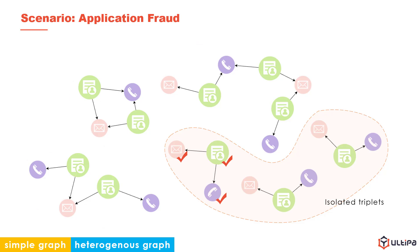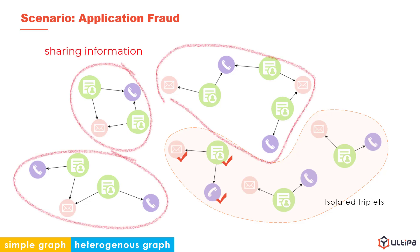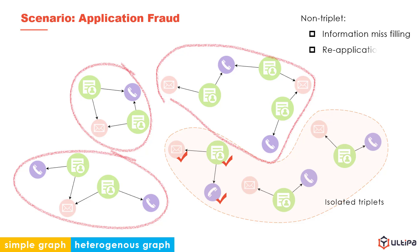Any structure larger than a triplet results from sharing emails or phone numbers between applications, suggesting a chance of information mis-filling or reapplication by the same or different person. The non-triplet structures are usually investigated since reapplication is forbidden in many cases, like coupon distribution, credit card issuance, and so on. Criminal gangs are sometimes found hiding behind a chain or a more complicated structure, sharing fewer IDs to apply for more benefit.